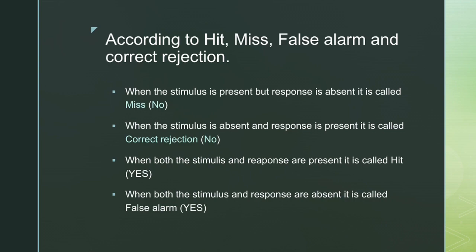According to hit, miss, false alarm, and correct rejection: when the stimulus is present but the response is absent, it is called miss. When the stimulus is absent and response is present, it is called correct rejection — no. When both the stimulus and response are present, it is called hit — yes. When both the stimulus and response are absent, it is called false alarm — yes.